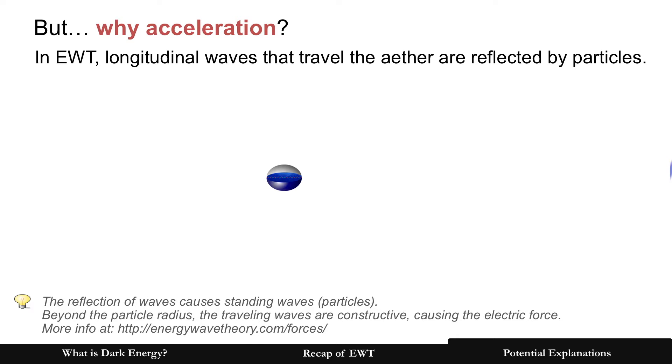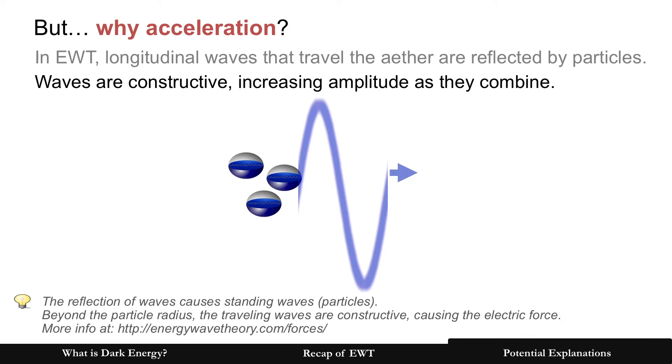In EWT, longitudinal waves travel the ether and are reflected by particles. This is a very simple version, but that's what causes mass. Beyond it is traveling waves which is constructive and causing the electric force. When there are more particles, there's more reflections, and that reflection increases the amplitude. We see this all the time in electricity, for example.